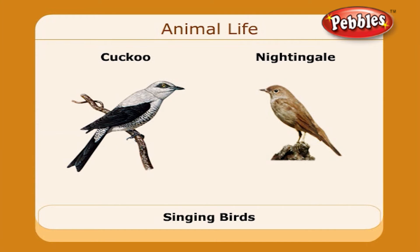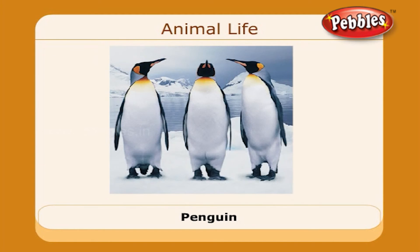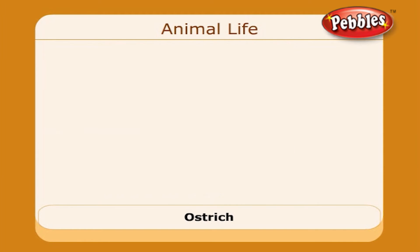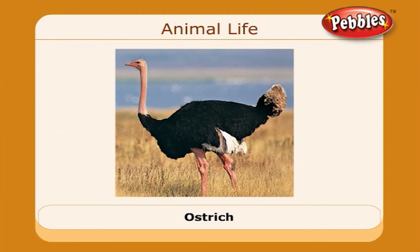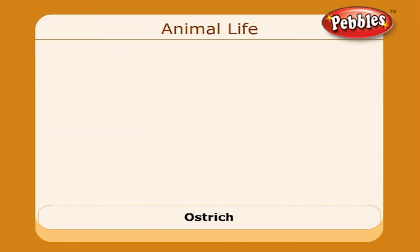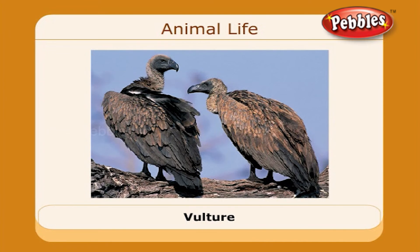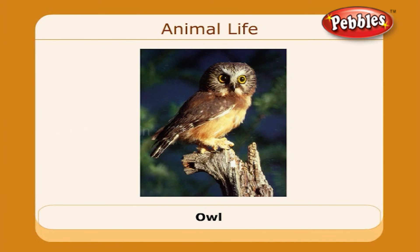Nightingale and cuckoo are singing birds. Birds like penguin and ostrich do not fly at all. Ostrich is the fastest runner. Eagle, vulture, and owl fly very high. Oh, they are dangerous birds.